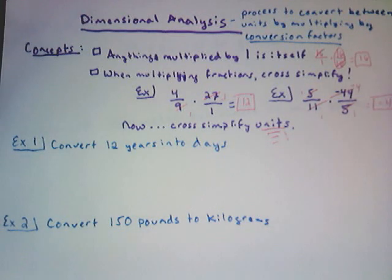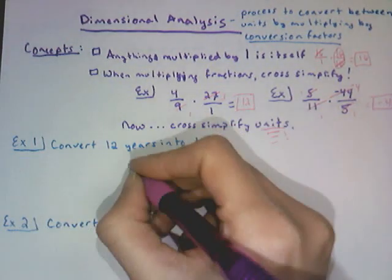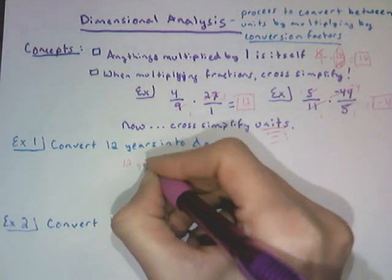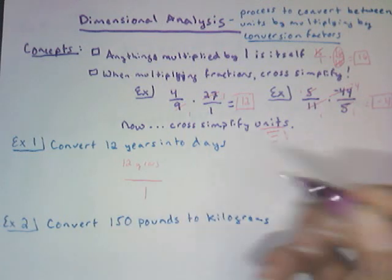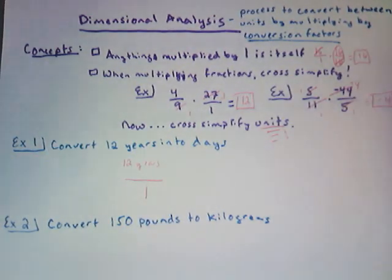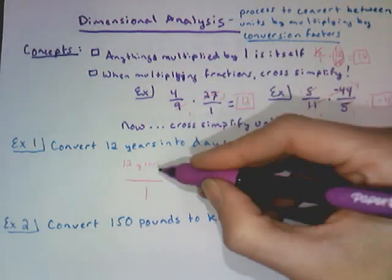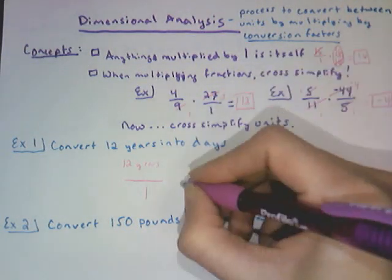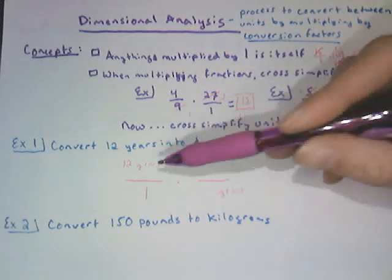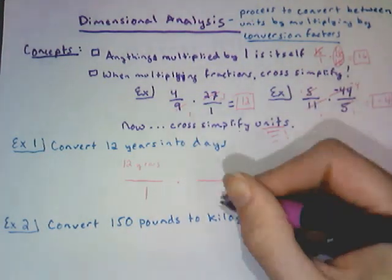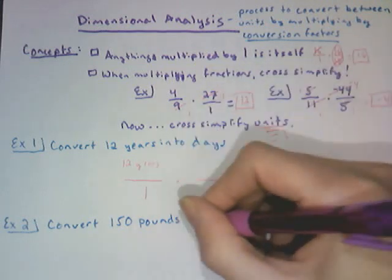So 12 times 365 is my answer. So here's how the process is going to look. 12 years isn't a rate, but we want to make it look like a fraction. So we put it over 1. And then we want to convert it to days. So if I'm going to physically cancel out the units of years, I have to put it on the bottom because years is going to cancel out by putting them on the top and the bottom.